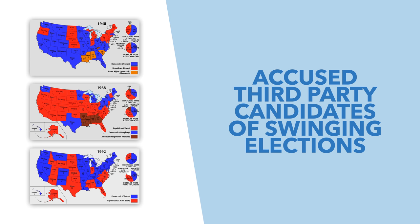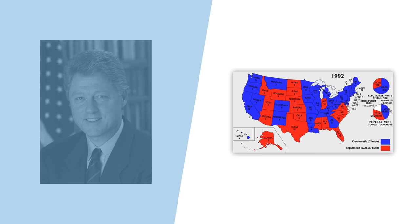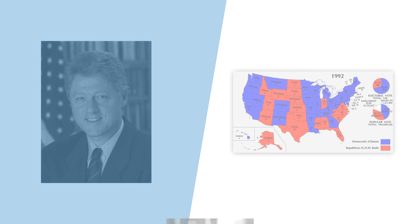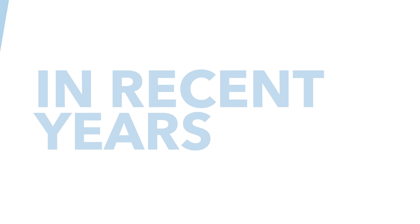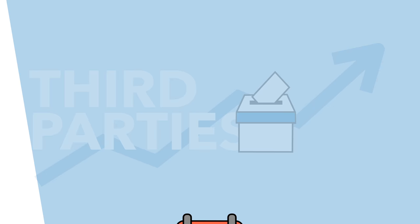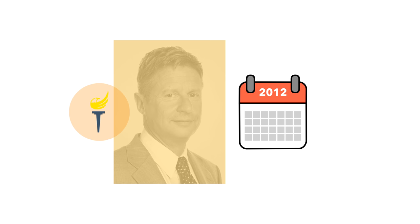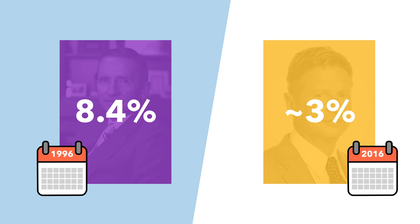It is worth noting that some people have accused third party candidates of swinging elections. Ross Perot's run in 1992, for example, was credited at the time as the factor that led to Bill Clinton's win that year. However, other studies on that election have claimed that Perot took votes from both President Bush and then Governor Clinton about equally. In recent years, third parties have not been anywhere near as successful and haven't gained any electoral votes since 1968. They have, however, gradually increased their share of votes — in 2012, Gary Johnson, the Libertarian candidate, garnered less than 1% of the vote share, but in 2016, Johnson gained just over 3%, the highest vote share of any third party candidate since Ross Perot's 1996 performance.